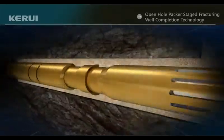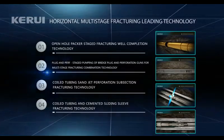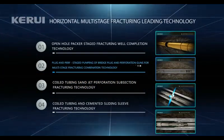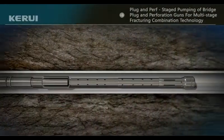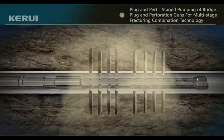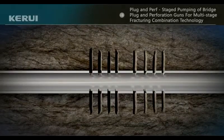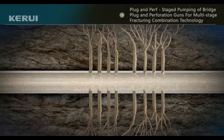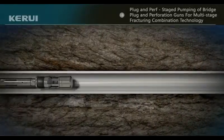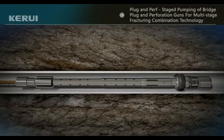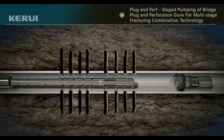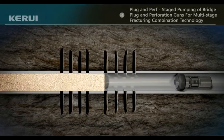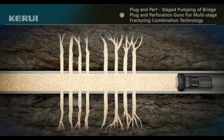Plug and perf multi-stage fracturing combination technology: first, we use TCP tubing conveyed perforating and then proceed to casing fracturing. After the first stage is hydraulically fractured, a bridge plug is set. Bridge plug and perforating guns for consecutive stages are conveyed by wireline and pumping. After perforating, we trip out of hole and proceed to the next stage casing fracturing treatment. These steps are repeated until the multi-stage hydraulic fracturing treatment is completed.